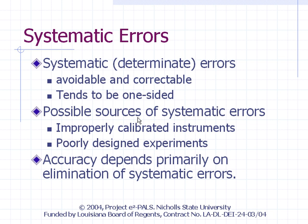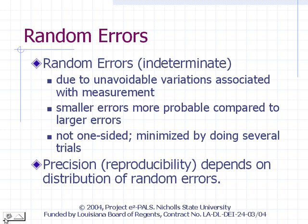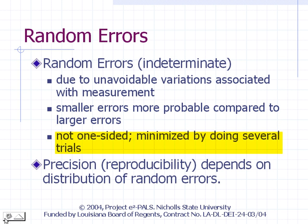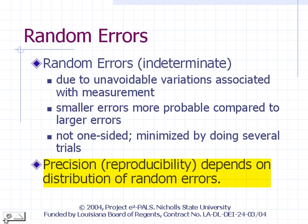Students should be more concerned about the other type of errors. It is not possible to completely eliminate experimental errors. Errors due to unavoidable variations associated with the measurement are called random or indeterminate errors. In general, smaller errors are more probable than larger ones. The best we can do is perform multiple trials and average their results, because random errors tend to average out to zero. Unlike systematic errors which are one-sided, random errors can lead to measured values that are higher or lower than the true value with equal probability.